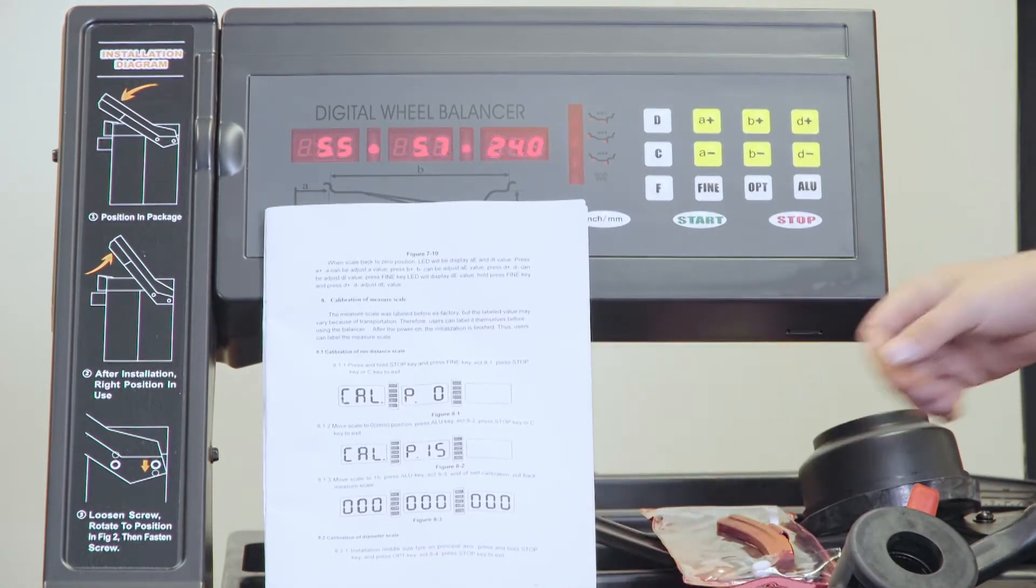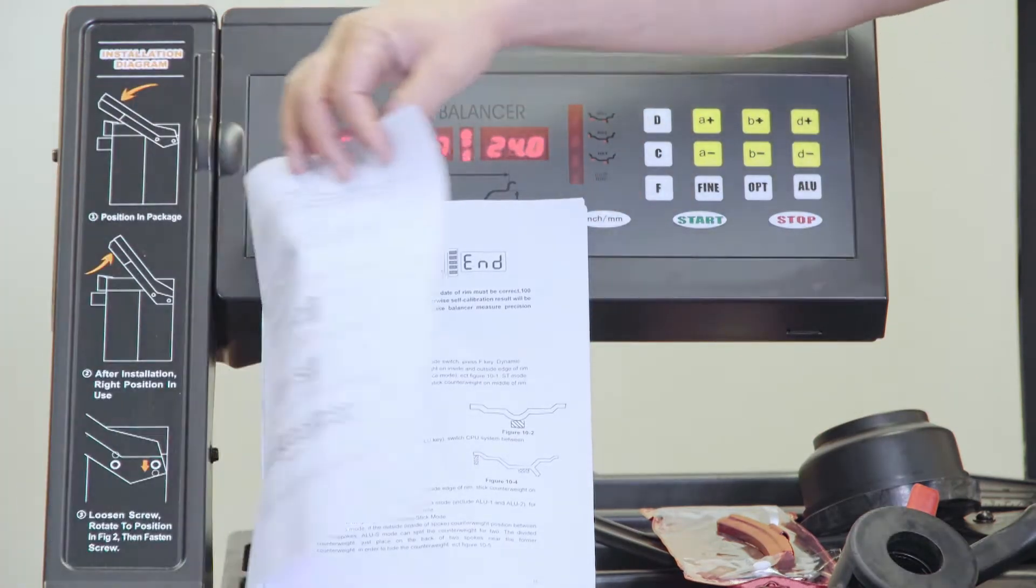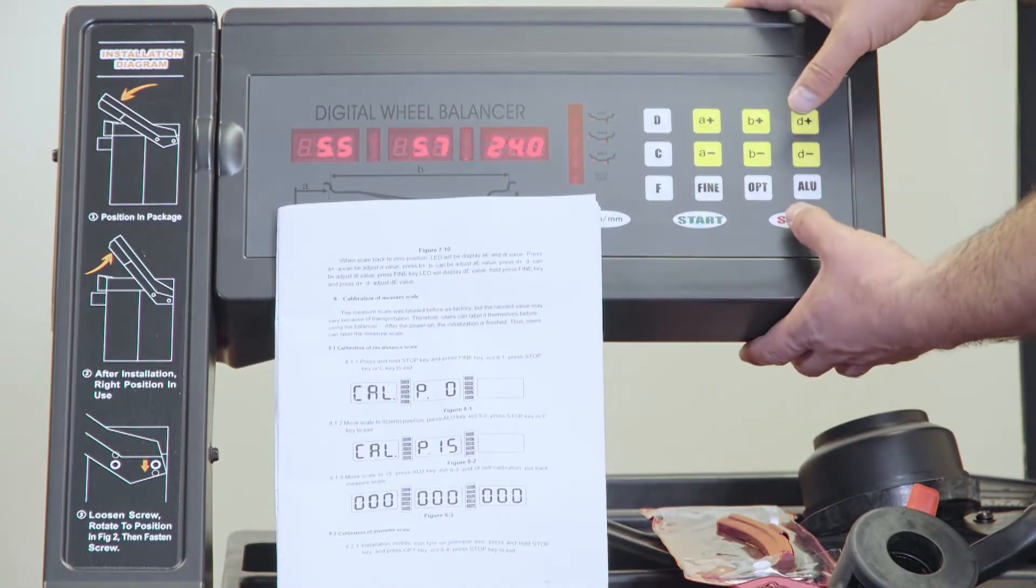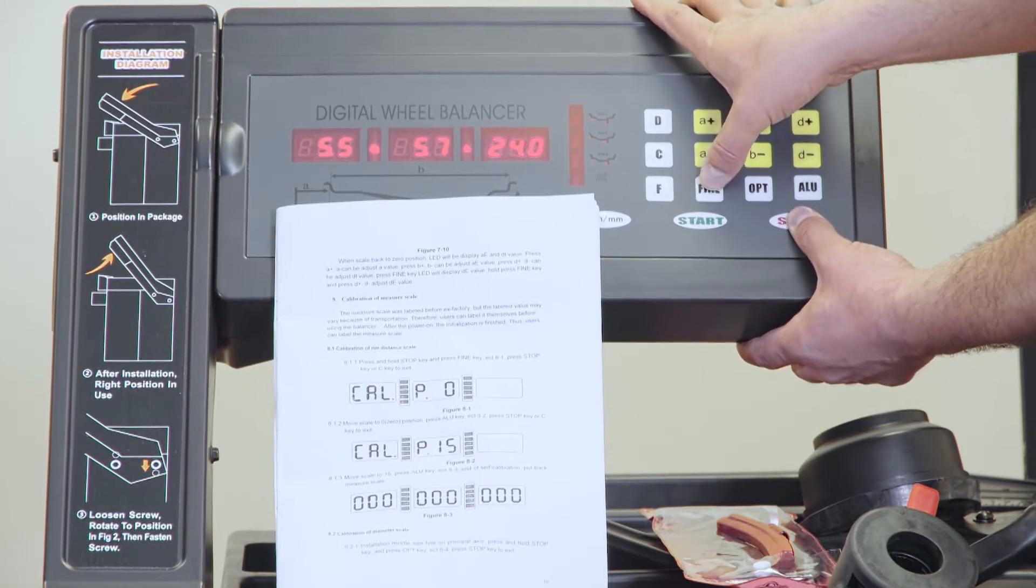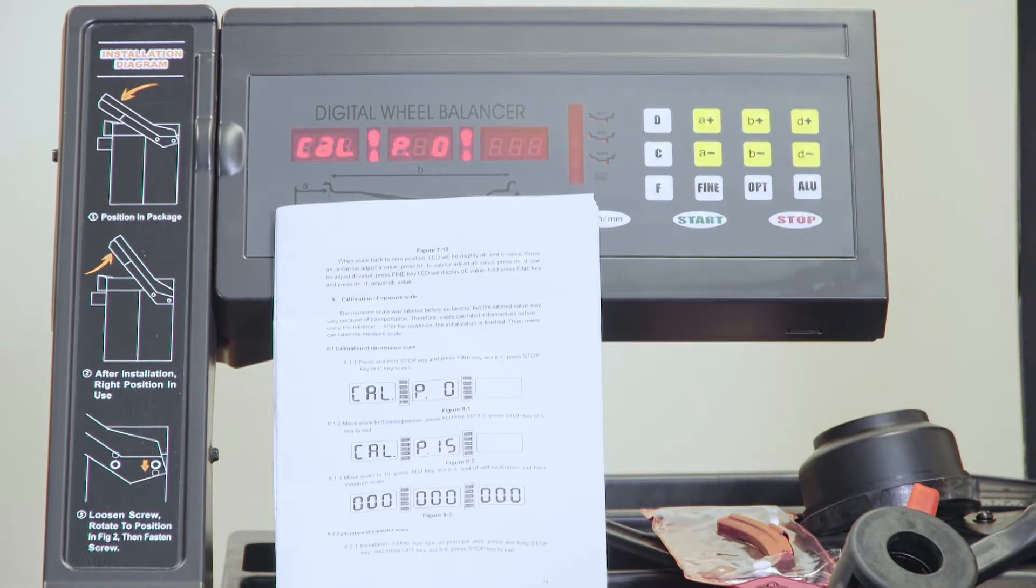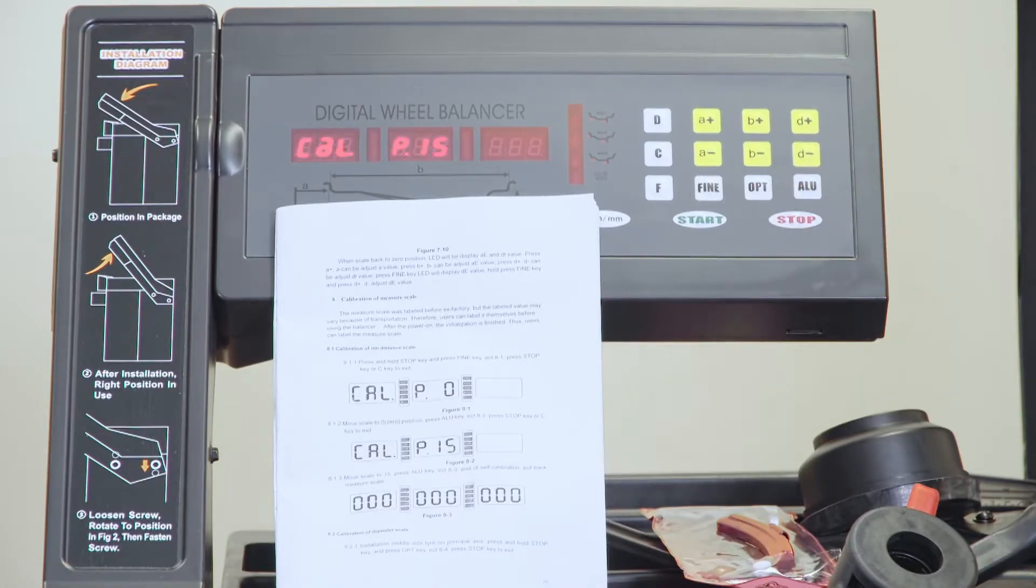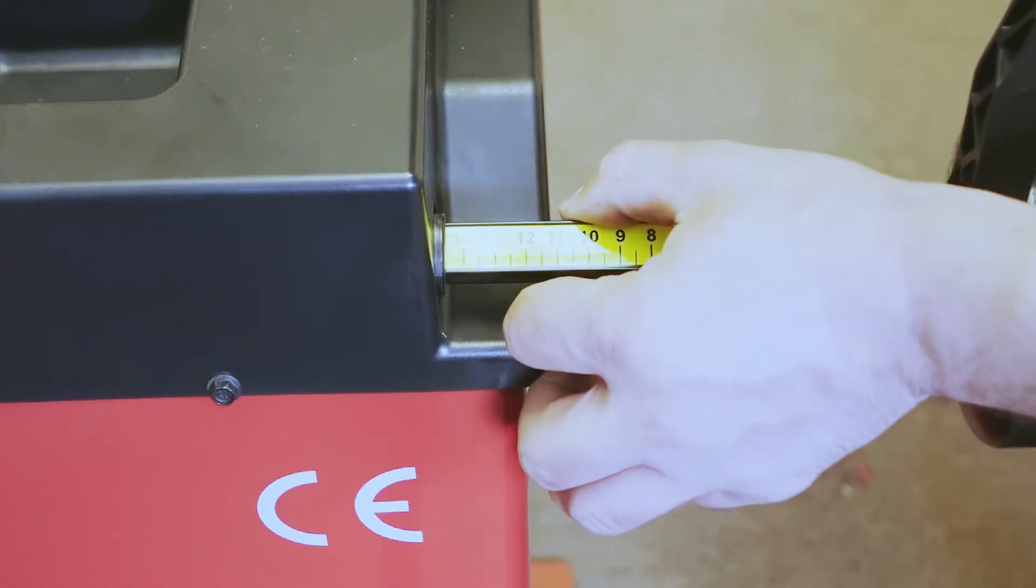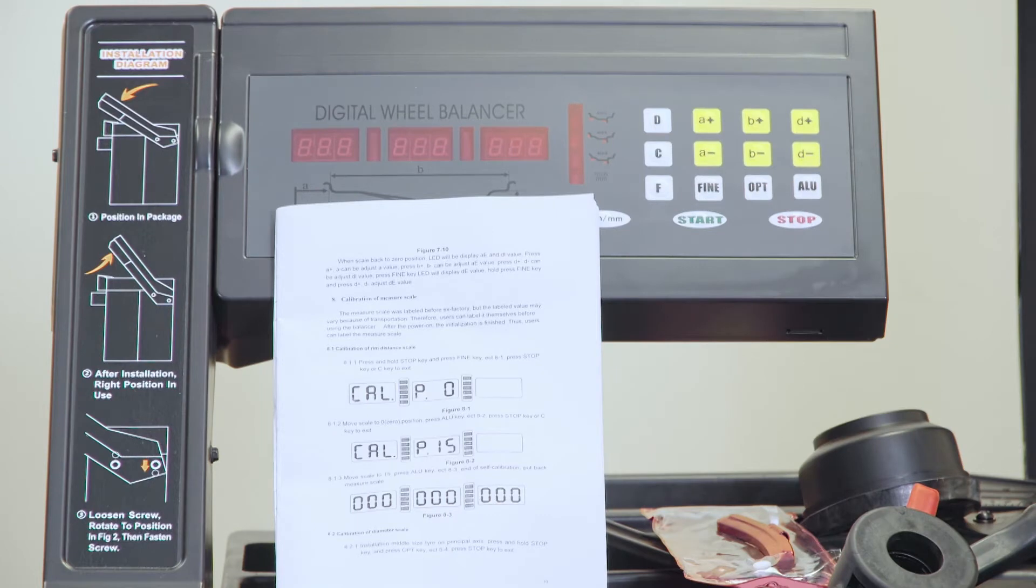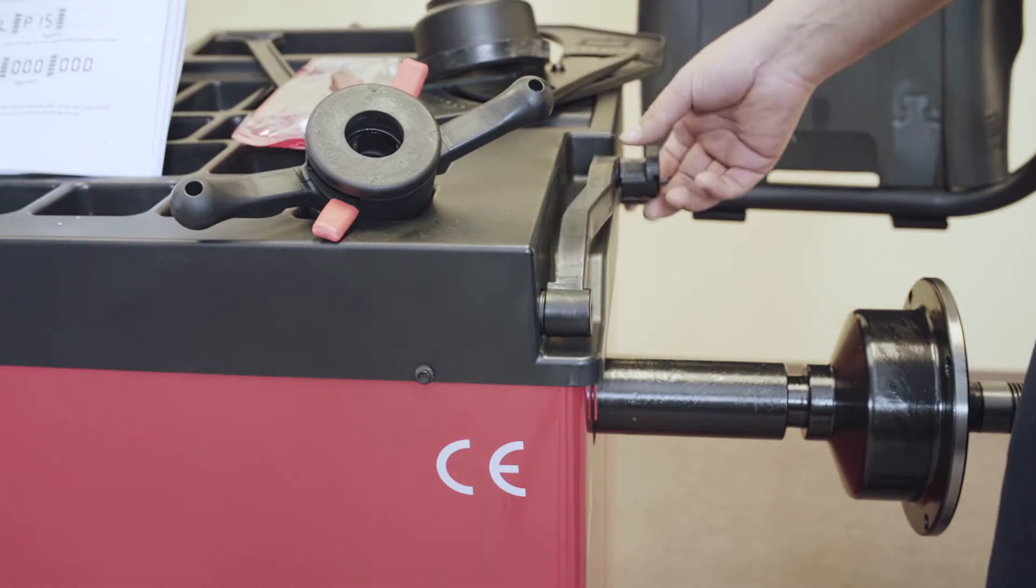Calibration of the ruler. You'll find these settings on page 10 and page 11 of the manual for self calibration and ruler calibration. To do that, you're going to hold stop and fine. Then you're going to bring the ruler to zero, press aluminum button again to save it. Pull the ruler to 15, aluminum to save it. And you have to wait until you see all the zeros on the screen before you let the ruler go.